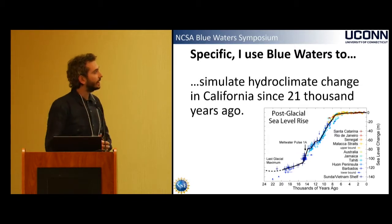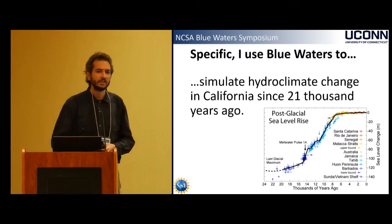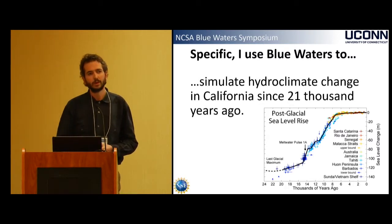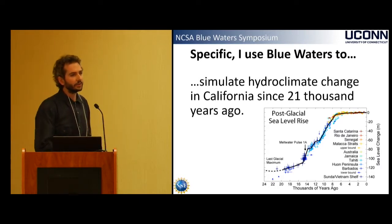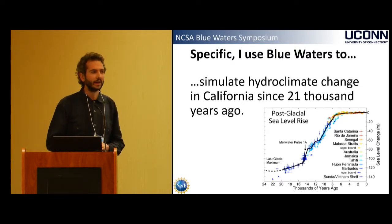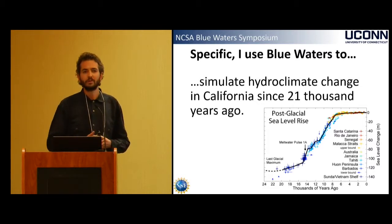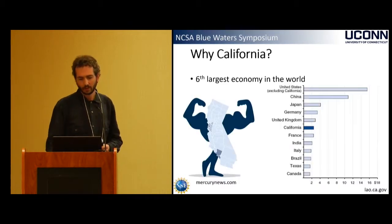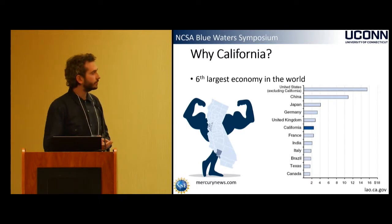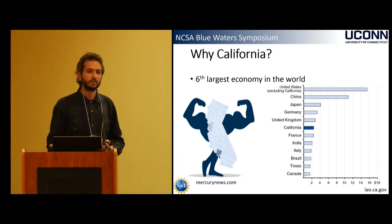Specifically, our group uses Blue Waters to simulate hydroclimate change in California since the last glacial maximum. The last glacial maximum was about 21,000 years ago. Sea level was about 125 meters lower than present day, CO2 was about 90 parts per million lower, and climate was probably around five to six degrees cooler than pre-industrial. California, if it were its own economy, would be the sixth largest in the world, so it's obviously very important, and it also has a very large population.